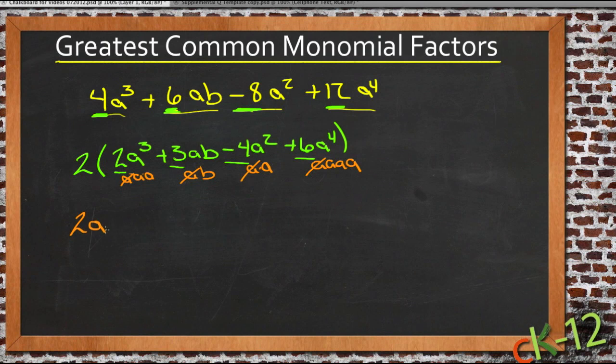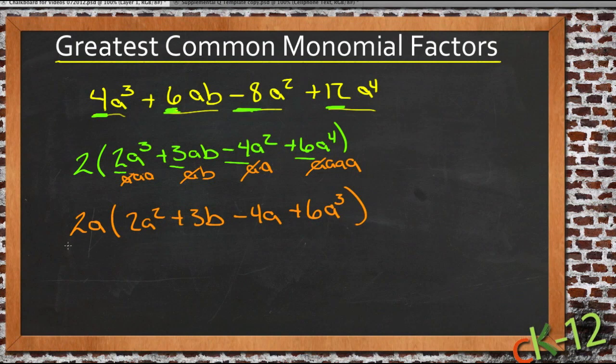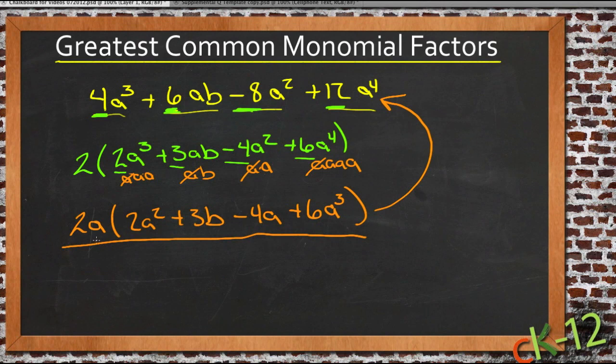So then I'll put that a outside and I'll have 2a times (2a² + 3b - 4a + 6a³). So this expression right here is exactly the same as this expression up here because all I did was say, well, everything inside could be multiplied by this 2a to get what I started with.